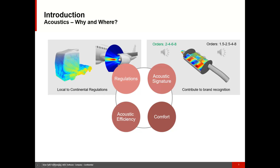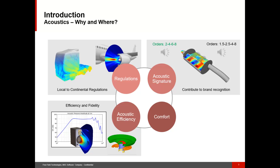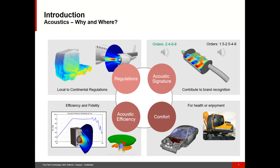A product can also be designed to generate sound with good energy performance. This means that the objective is to obtain the most acoustic energy and the best sound fidelity with a given electric power — this is exactly the case for loudspeakers, for example. Finally, comfort is also a very important aspect. For heavy machineries or trucks, manufacturers are paying a lot of attention to cabin noise because workers spend their entire day using the products.